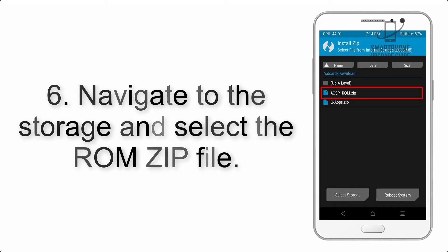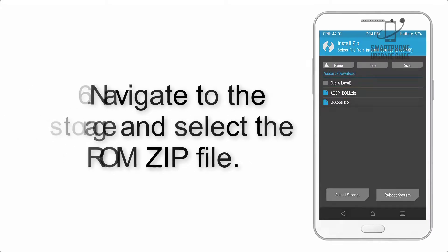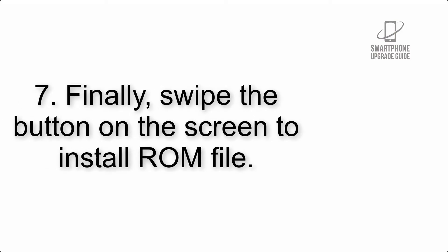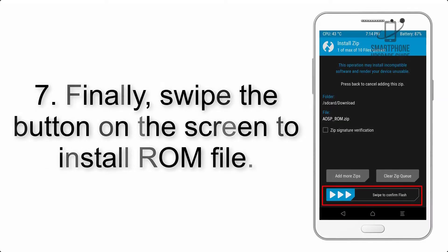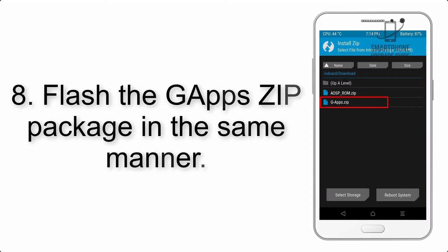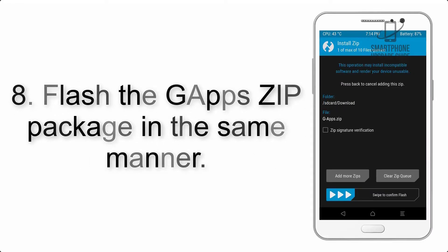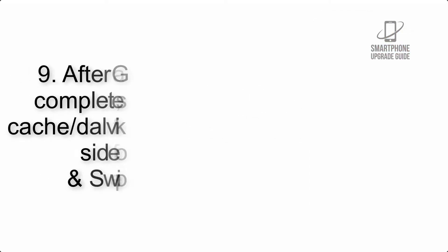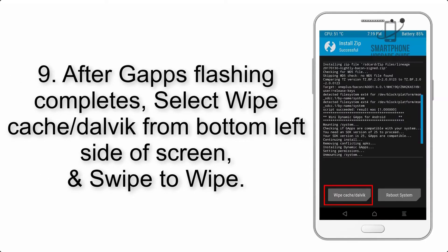Step 6: Navigate to the storage and select the ROM zip file. Step 7: Finally, swipe the button on the screen to install the ROM file. Step 8: Flash the GApps zip package in the same manner.